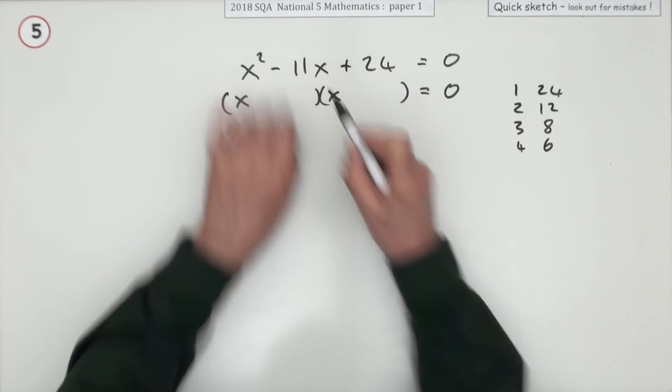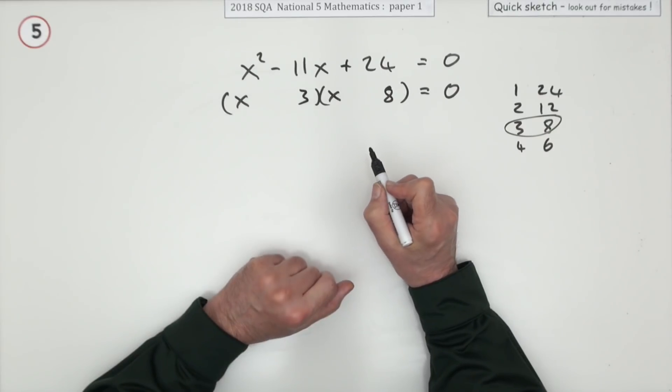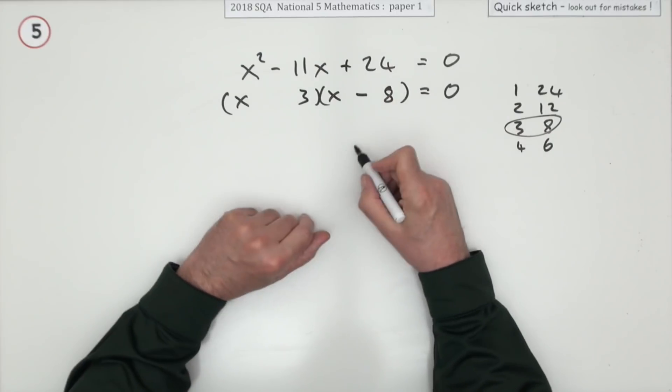But which is it? Well they have to add, not that sign, have to add to make 11. It's the three and the eight. Not only that, if that middle term is negative, that means the larger of the inner and the outer are negative.